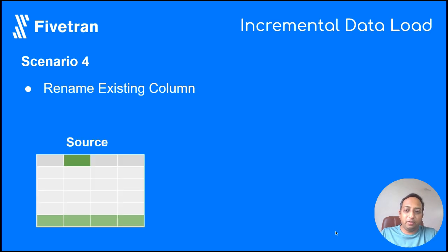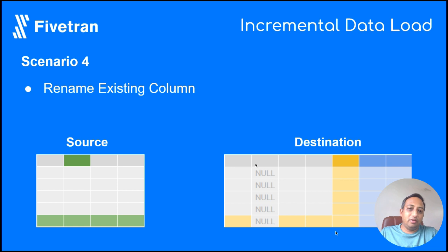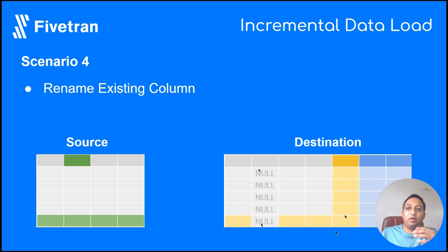If you rename an existing column — a schema-level change — FITRAN creates a new column and transfers all the data from the earlier column to the new column, then nullifies the values in the previous column. The second column will have all null values, while the new column with the new name contains all the transferred data.